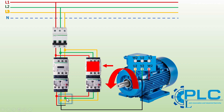We must ensure that both contactors never activate at the same time, as this could create a short circuit, which is very dangerous. To prevent both contactors from activating simultaneously, we need an interlock system in the control circuit. The interlock ensures that when one contactor is active, the other is automatically blocked — even if I press the reverse start button, it won't activate the reverse contactor while the forward contactor is already running. Now that we have completed the power circuit wiring, let's move on to the control circuit.